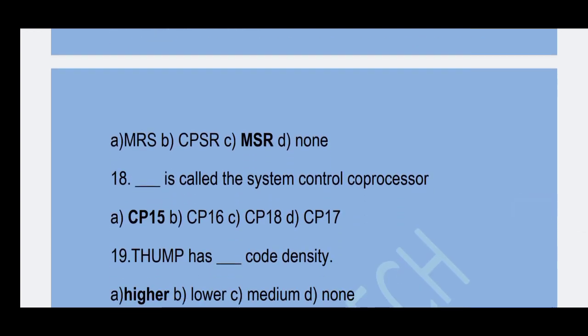Next question: Which coprocessor is called the system control coprocessor? Option A — CP15 is the correct answer.